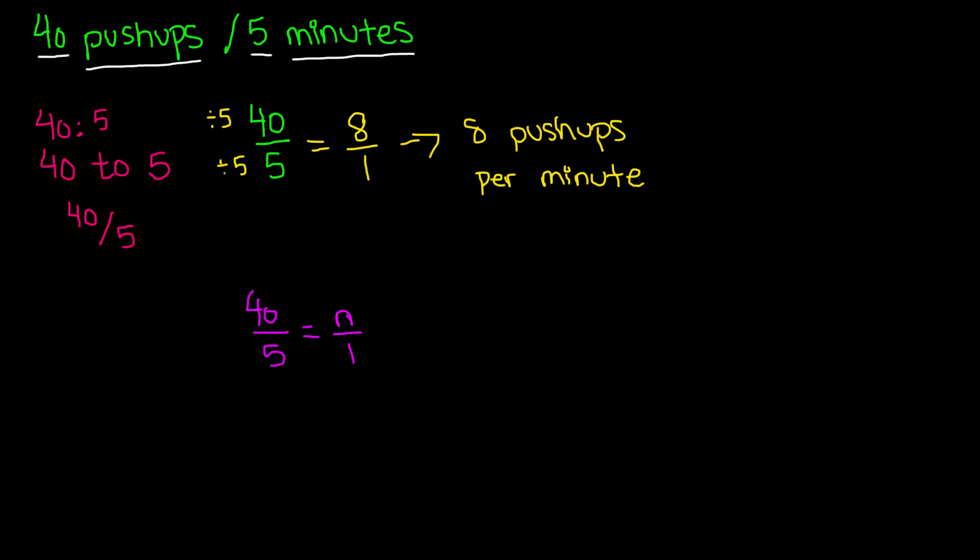Now we have to do cross products. Cross products is basically you're multiplying it, so we're going to multiply 40 by 1, and we're going to multiply n by 5. We know that 40 times 1 is 40, and 5 times n is going to give us 5n. So if we write this, it has to be 5n is equal to 40.